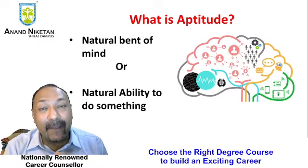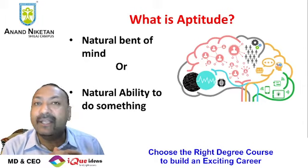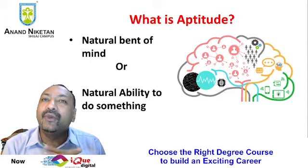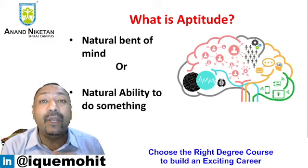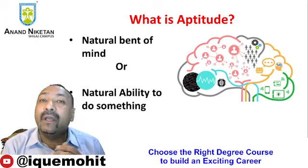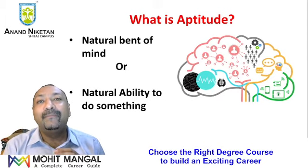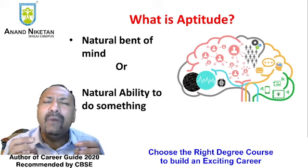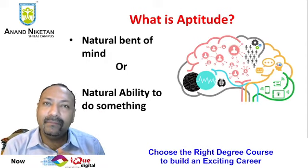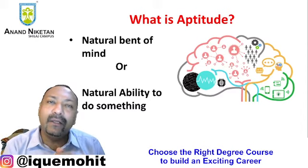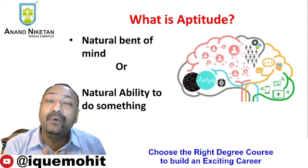A third category of child is one who asks questions about everything — he or she has a question for everything. You tell them what they're sitting on is called a chair, they ask 'Why?' You say the thing on the ceiling that spins is called a fan, they ask 'Why?' One day the father comes home from work and says 'Beta, I am your father,' and the child asks 'Why?' They spend the whole day driving their parents crazy with questions.